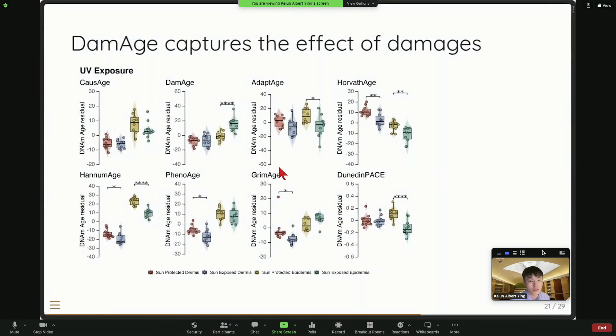And again, this is another interesting case. We look at UV-exposed skin. So from left to right, sun-protected skin dermis, sun-exposed dermis, sun-protected epidermis, and sun-exposed epidermis. So our clock, the damage is the only clock they're able to show that the sun-exposed epidermis is epigenetically older than the sun-protected epidermis. Other clocks, they either don't show effect or show the opposite change.